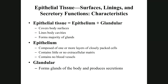Epithelium covers and lines — it covers the body surface, like your skin, and lines the inside of the body, like the inside of blood vessels or the digestive tract. Glandular tissue forms the glands; any gland in the body is made of glandular epithelial tissue.